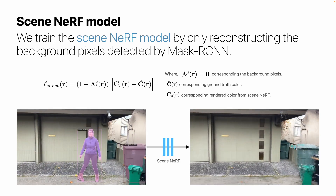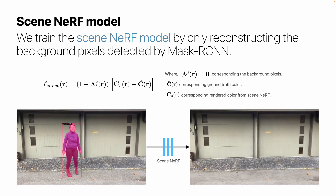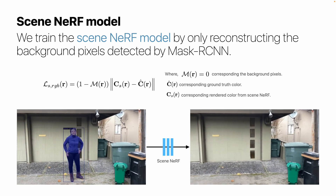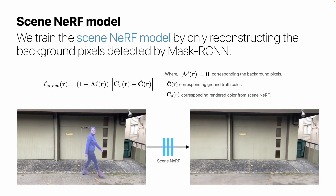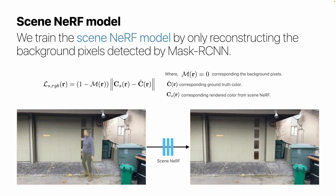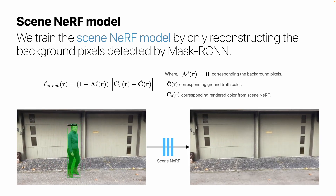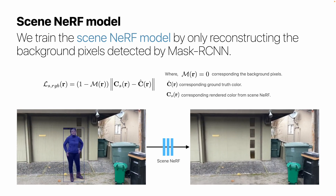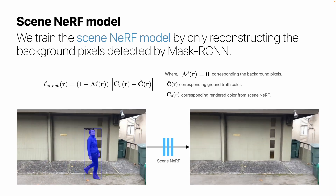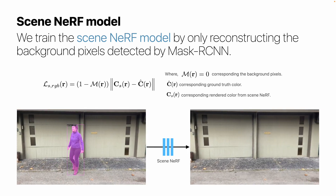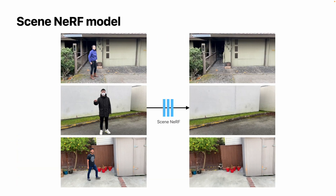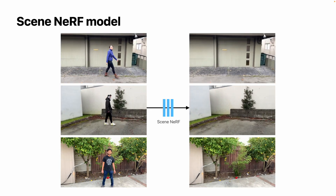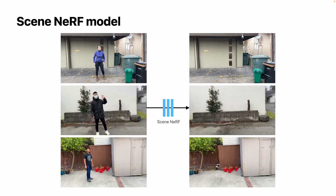Our scene NeRF model is a static NeRF model. We train it by only reconstructing the background pixels detected by MascarCN. The video on the left is the raw video overlaid with MascarCN detections. By simply ignoring the human pixels during training, we can remove the dynamic human in the video, as shown on the right. Our scene NeRF model can successfully reconstruct the background scene even with limited coverages.